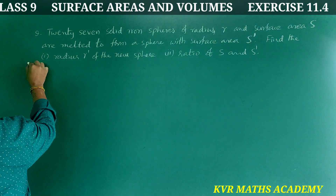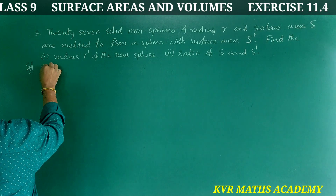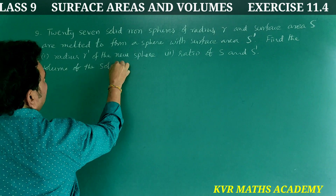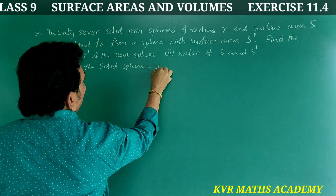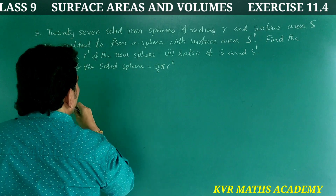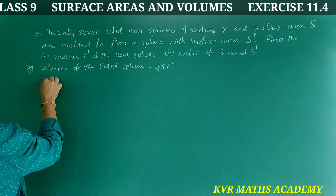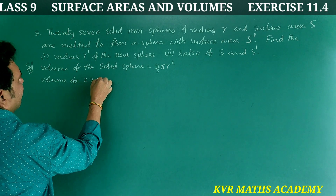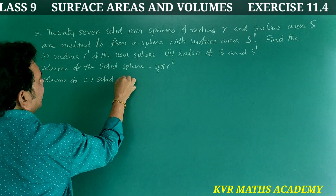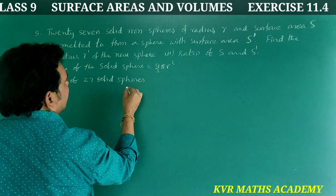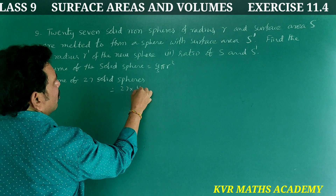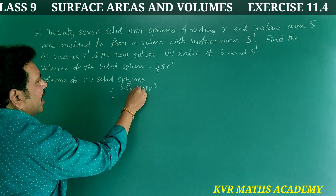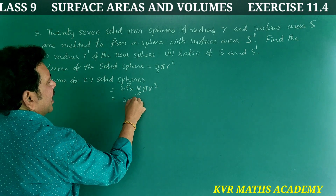Let us find the solution. Volume of the solid sphere is equal to 4 by 3 pi r cube. Volume of 27 solid spheres is equal to 36 pi r cube.